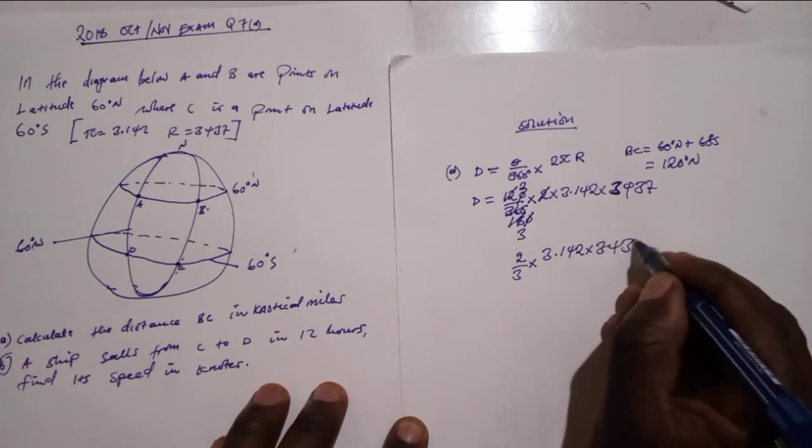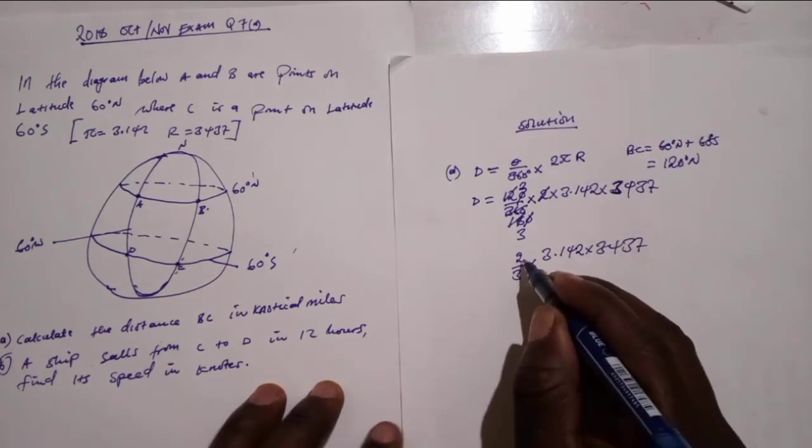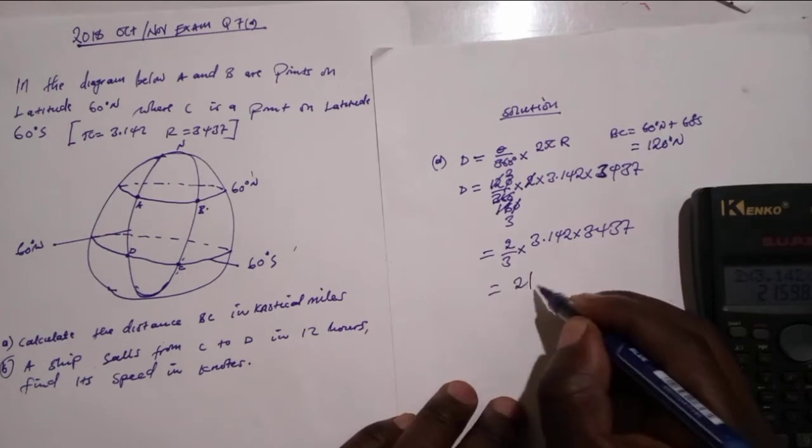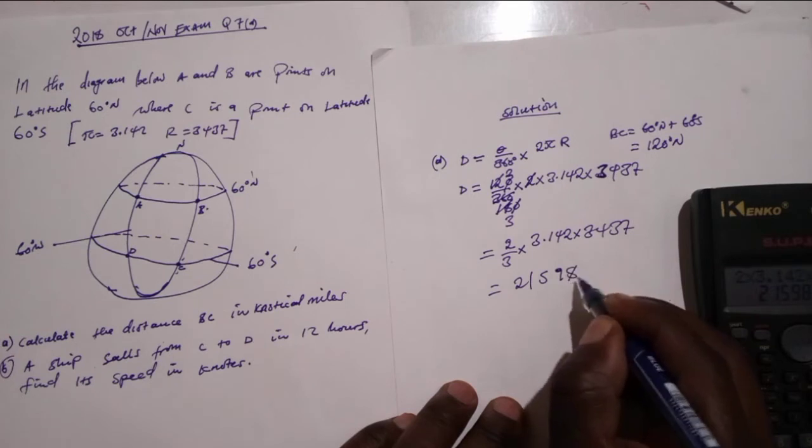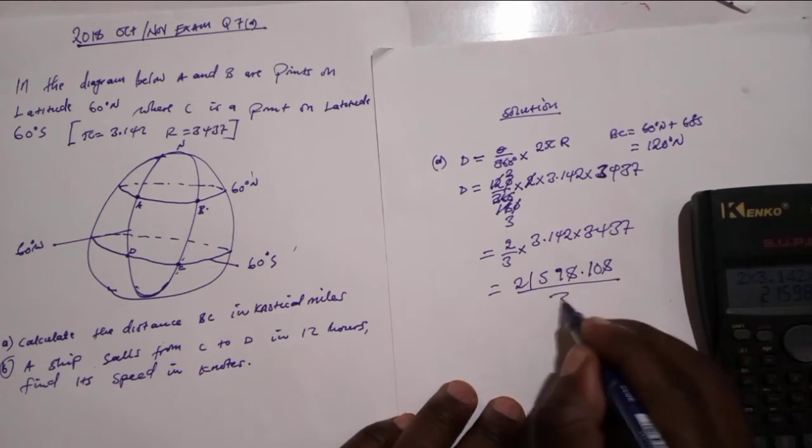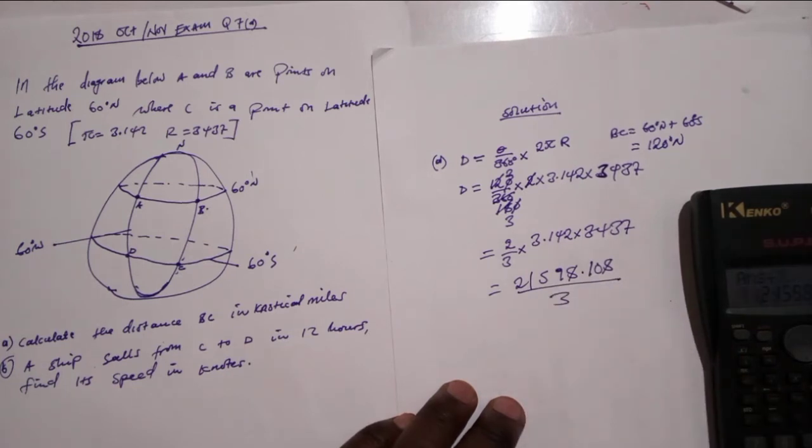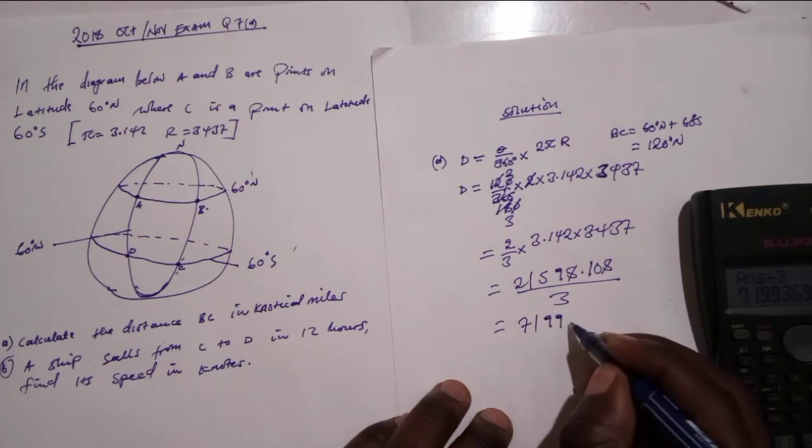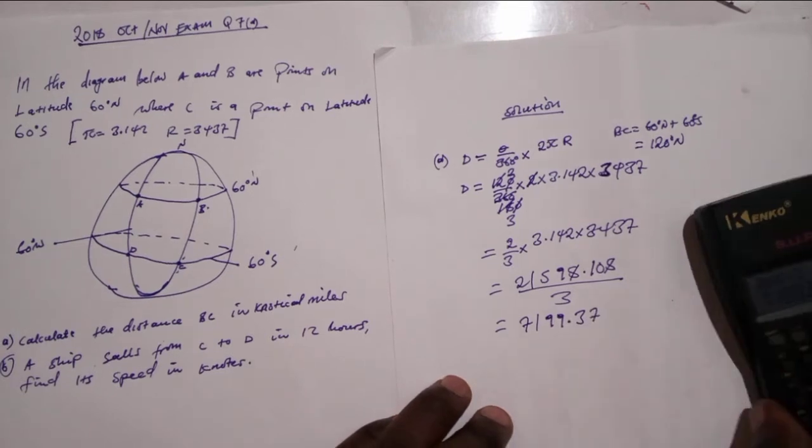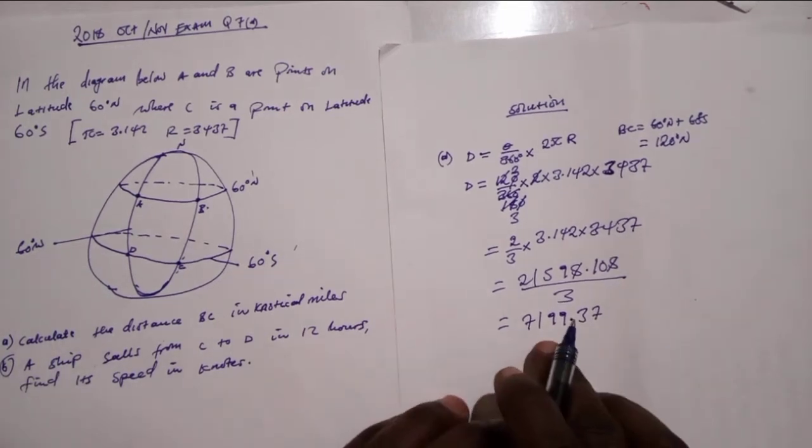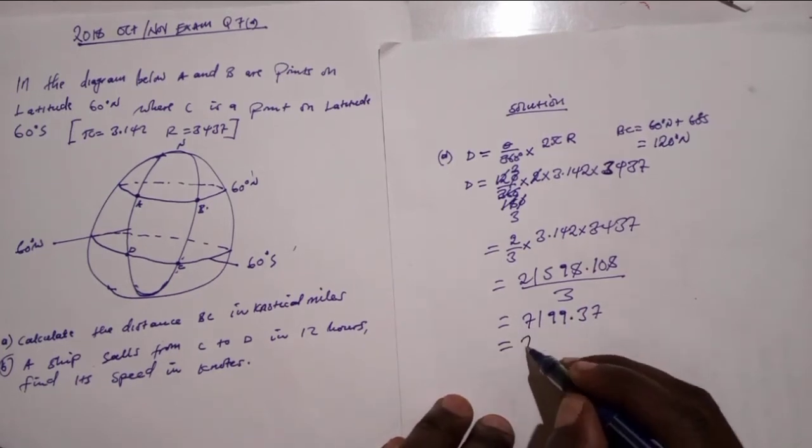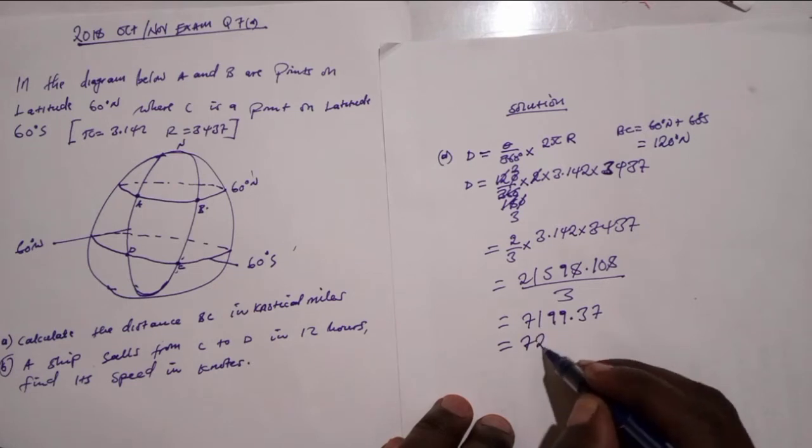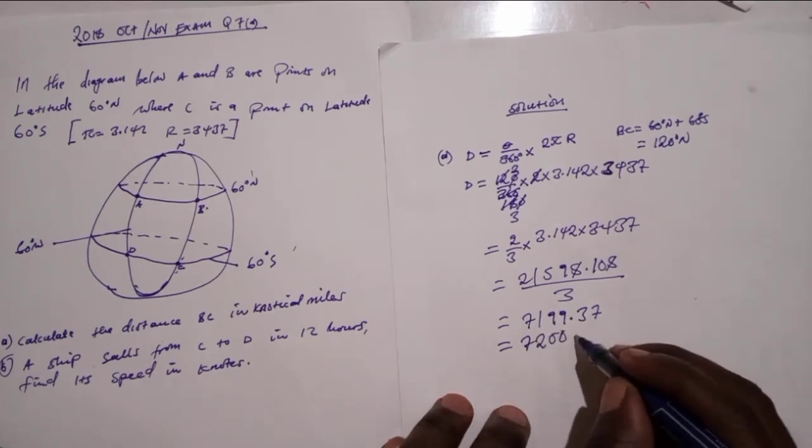So here we remain with 2 over 3 multiplied by 3.142 multiplied by 3437. Let's put 21598.108, then we divide by 3. Then we divide the answer by 3, which it will be 7199.337. If you round off, we have to take this in nautical miles, which it will be 7200 nautical miles.